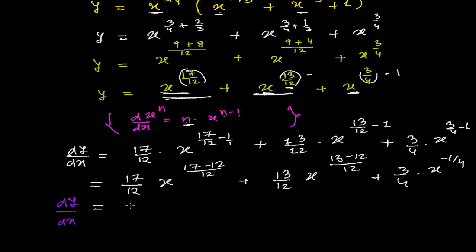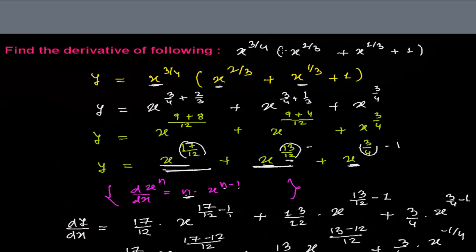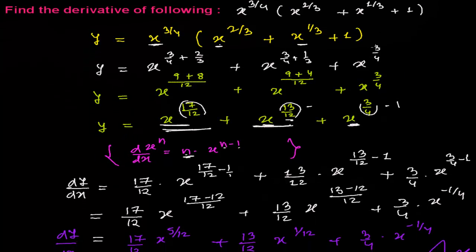So the final derivative dy/dx of the given function is 17/12 times x to the power 5/12, plus 13/12 times x to the power 1/12, plus 3/4 times x to the power minus 1/4. That is the answer for the derivative of x to the power 3/4 times the bracket x to the power 2/3 plus x to the power 1/3 plus 1. I hope you enjoyed this video — visit my blog for more similar problems, and we'll see you in the next video. Goodbye.